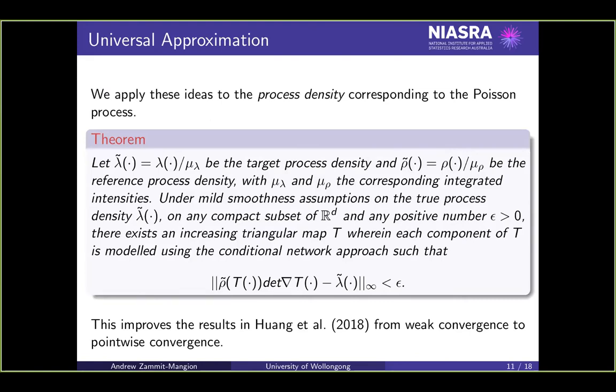How does all of this relate to Poisson processes? If we define the process density associated with the Poisson process, that is simply the intensity function divided by the integrated intensity over the domain, that's mu lambda in this case. If you think of density functions, that could be any function, and mu lambda would be the normalizing constant. All we need to do is go into process density space. We need to have consistent estimators for these integrated intensities, which is relatively easy to do. Then we can apply our normalizing flow architectures.